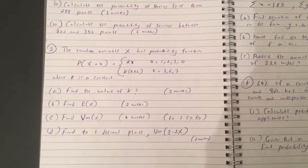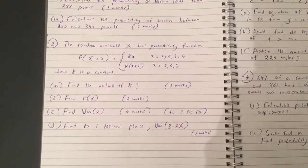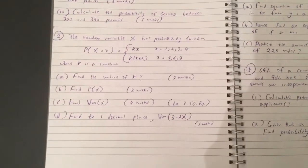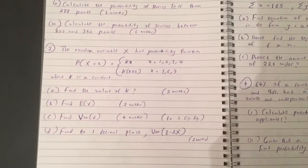Question B: Find the expected value of x. Question C: Find the variance of x. And question D: Find one decimal place variance of 3 minus 2x.